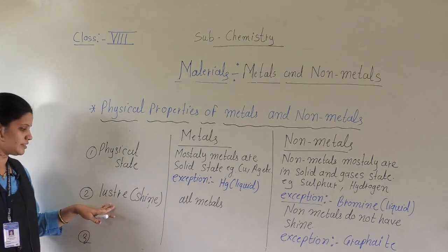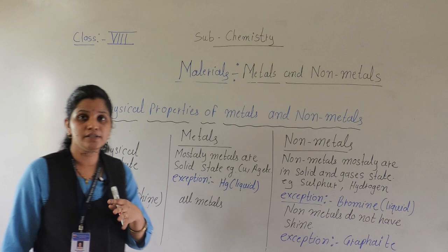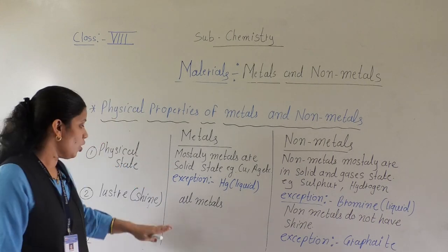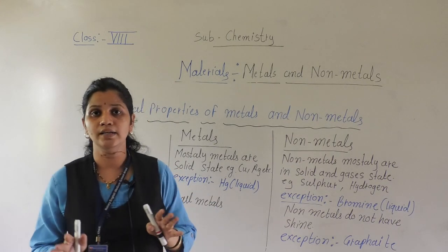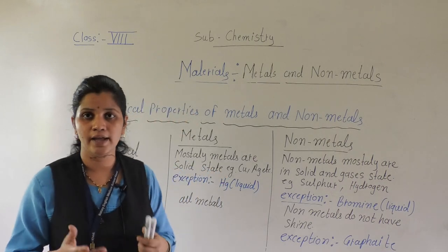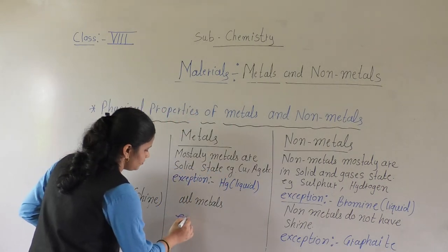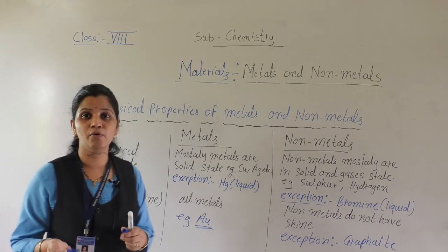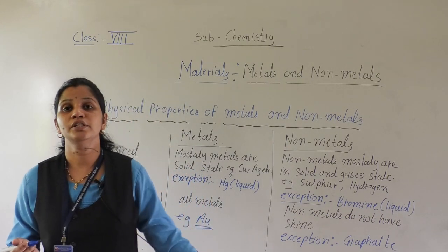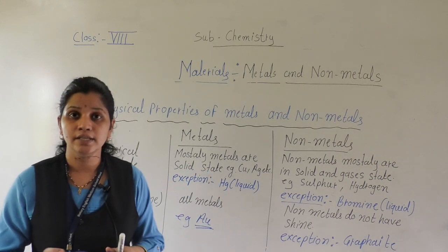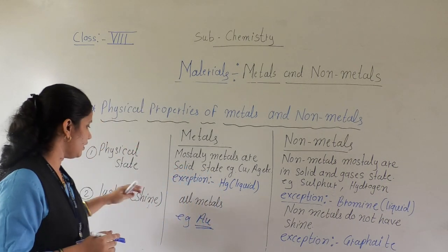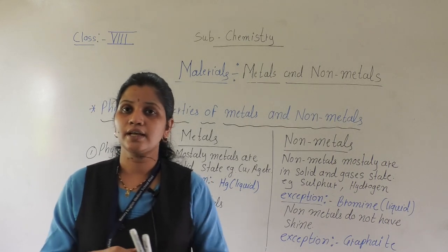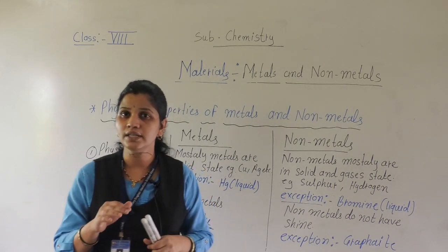The second property we will see is luster. Luster means shine. All metals are lustrous — they all have shine. For example, Au means gold. Gold we are wearing; we use gold to make jewelleries. Silver — these all are metals, and all metals have shine. But some metals have more shine and some are non-lustrous.